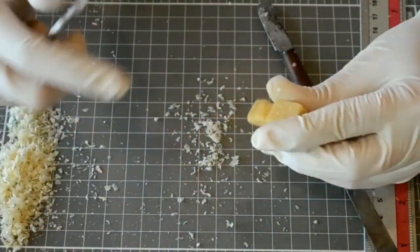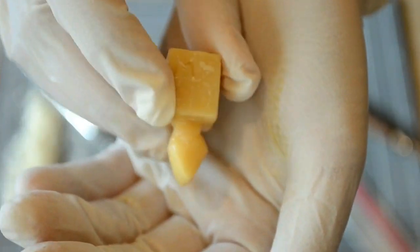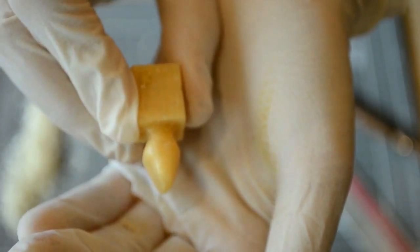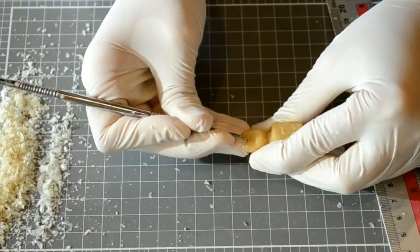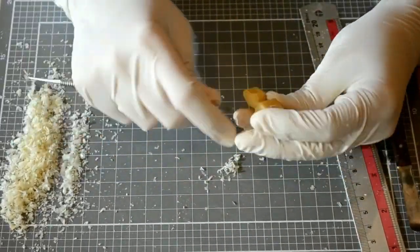Now, use your lecron carver to carve the distal and mesial sides of the temporary cingulum until you form a rounded cingulum. Use the spoon end of the lecron carver to carve out the lingual fossa and marginal ridges, making sure the ridges are higher than the fossa.